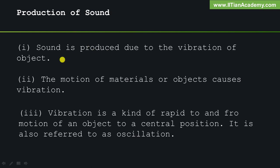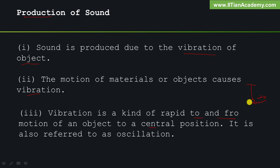In this slide, we will learn how sound is produced. Sound is produced due to the vibration of objects. The motion of materials or objects causes vibration. Vibration is a kind of rapid to-and-fro motion of an object around a central position. It is also referred to as oscillation.